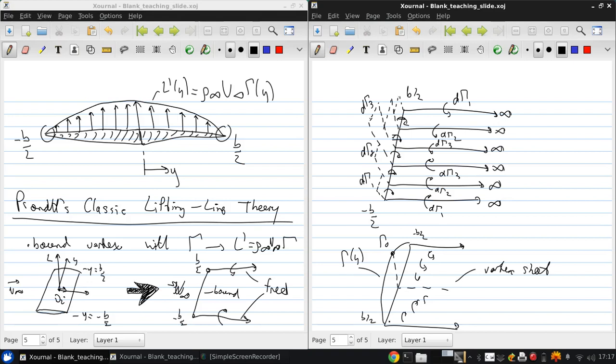If you integrate the strength of this vortex sheet all along the span, it's zero, because this half is going in one direction and the other half is going in the other direction.